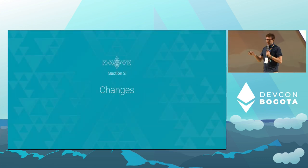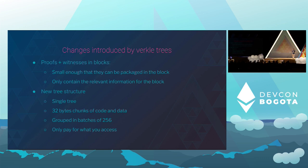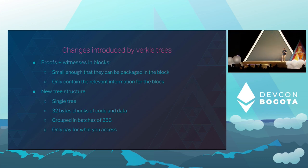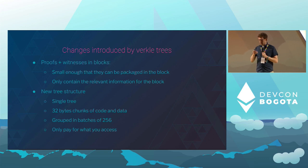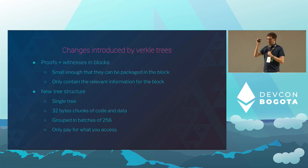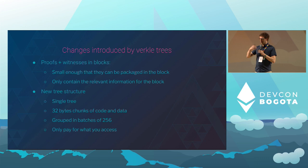Unfortunately it's not that simple — there are quite a few changes to introduce at the same time. The first is putting the proofs in the block, which is the whole point. But we also need to change the tree structure. The idea is that all the data ends up in a single tree. Currently accounts have their own tree, and for each account there's another tree encoding that account's storage. With Verkle Trees, everything is hashed and spread over a single tree.